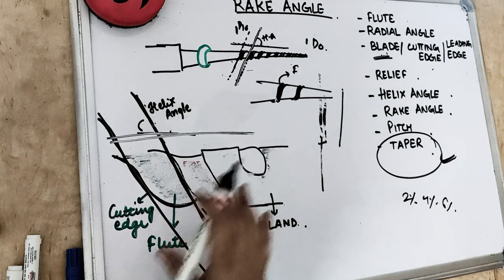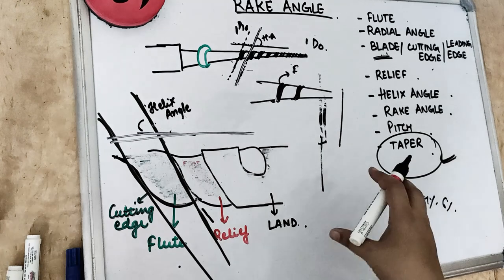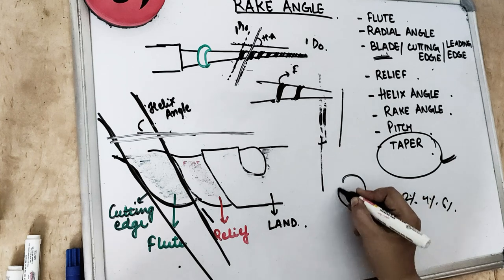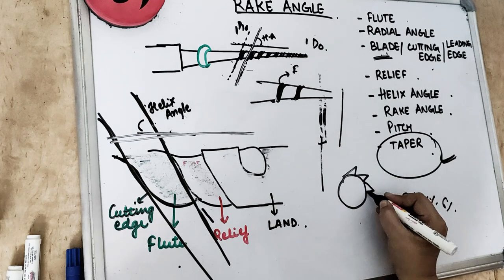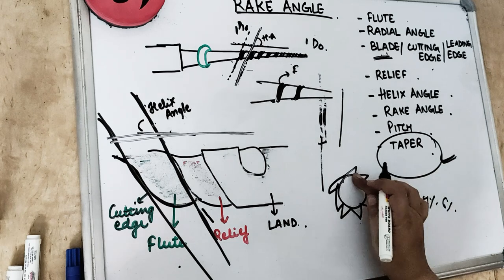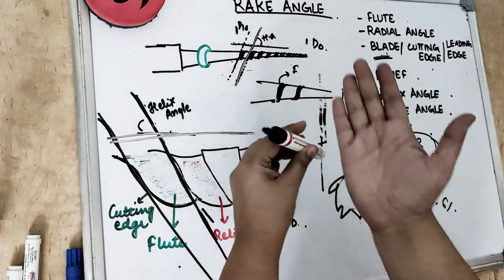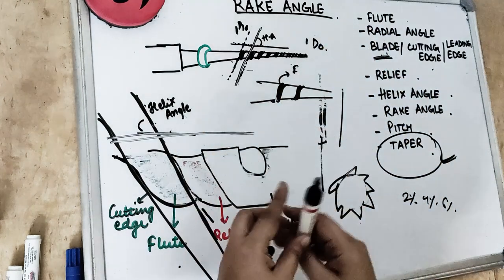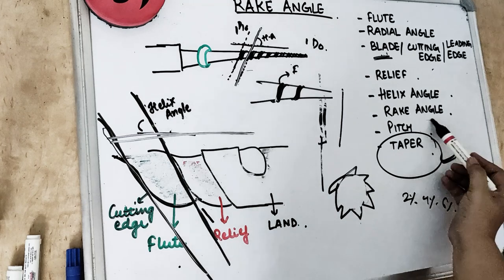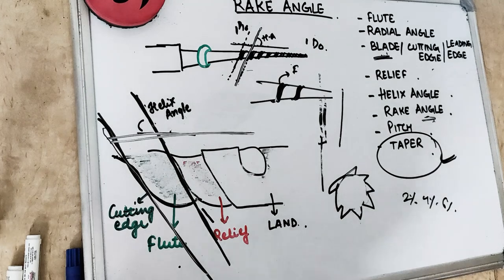Now, what is the rake angle? Today we will study more about it. The rake angle is the angle which is formed at the edge when we section the file. Once we section the file into a cross section, the angle it makes with the blade — that is our rake angle, which we are going to study in today's video in detail.